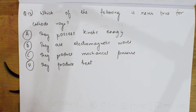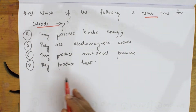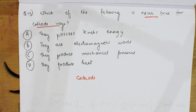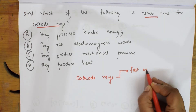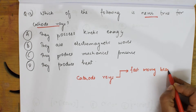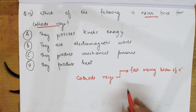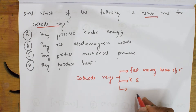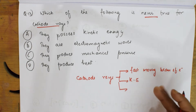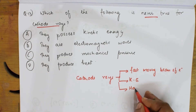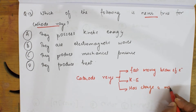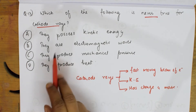Which of the following is never true for cathode rays? Basically, whenever I speak about cathode rays, what are their characteristics? They said which is never true. When I have to speak about cathode rays, the important concept to remember is cathode rays contain fast-moving beam of electrons — that's the first one in the discharge tube. Next, they have high kinetic energy. And next important thing: they have charge and mass.